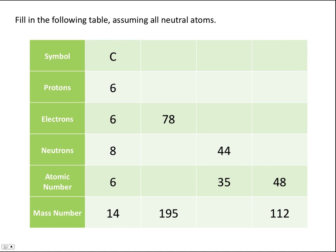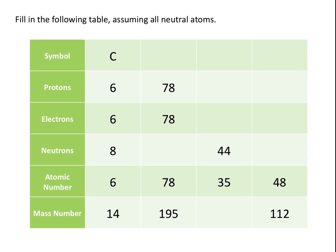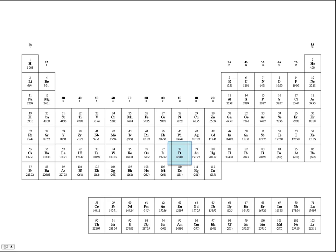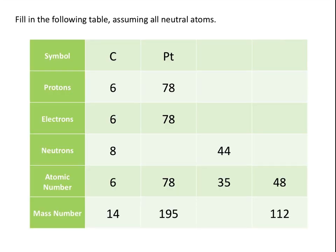Moving to the next column: if an atom has 78 electrons and it's a neutral atom, it must also have 78 protons. Because protons always equal the atomic number, the atomic number will also be 78. Looking up atomic number 78 on the periodic table, we see that element is platinum, with the symbol Pt. The number of neutrons equals the mass number, 195, minus the atomic number, 78, which gives us 117 neutrons for this isotope of platinum.